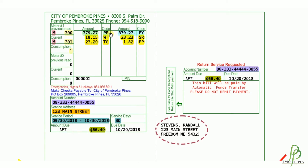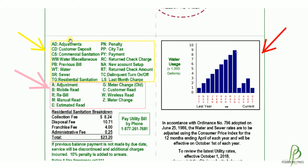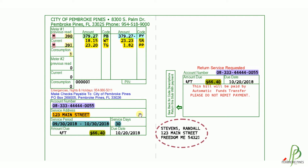The next items you'll want to take a look at: you'll see PB for your previous balance. And in this area, you may see code PY for payment if you've made a payment since your last billing. The dollar amounts and codes below indicate the charges on your current bill. The most common codes for these charges are also indicated on the back of your bill. The total of these charges, payments, and previous balance will show your current charges.